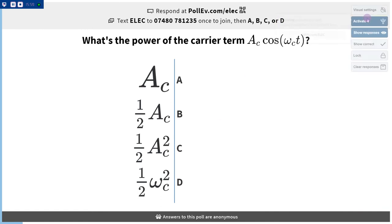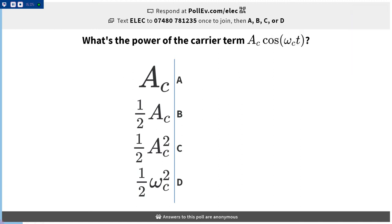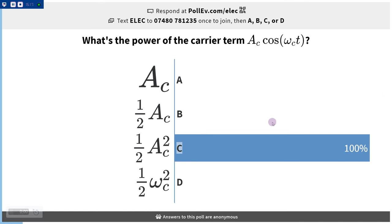Quick question. In that signal, where the carrier happened to be A_C volts, so we have A_C cosine omega_c t, what's the carrier power? Okay, so it's the amplitude squared over 2. Easy enough.